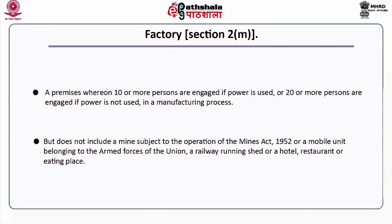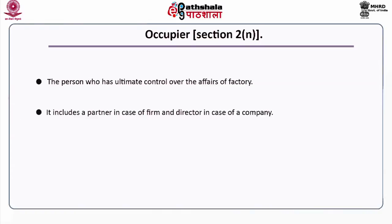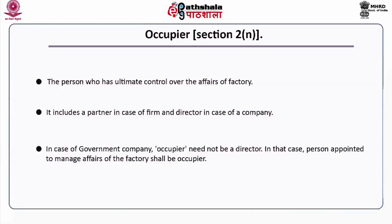The definition of factory does not include a mine subject to the Mines Act 1952, a mobile unit belonging to the armed forces of the union, a railway running shed, or a hotel, restaurant or eating place. Under Section 2N, the occupier is the person who has ultimate control over the affairs of the factory. It includes a partner in case of a firm and a director in case of a company. In case of a government company, the occupier need not be a director; the person appointed to manage affairs of the factory shall be the occupier.